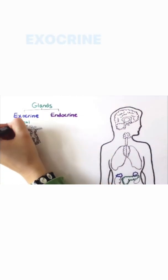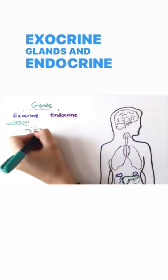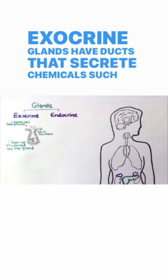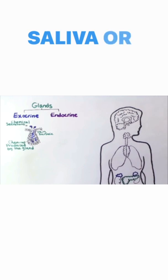There are two types of glands: exocrine glands and endocrine glands. Exocrine glands have ducts that secrete chemicals such as saliva or sweat.